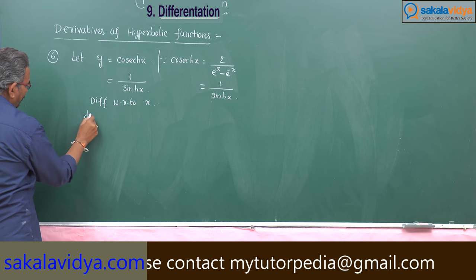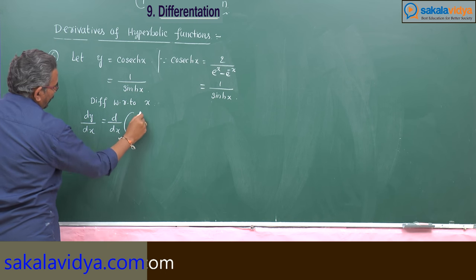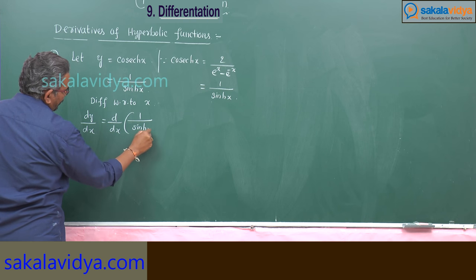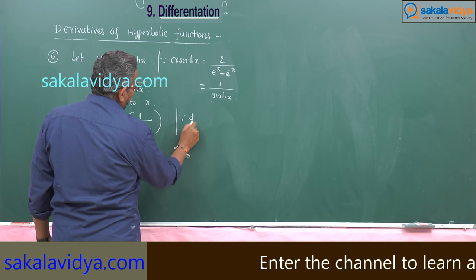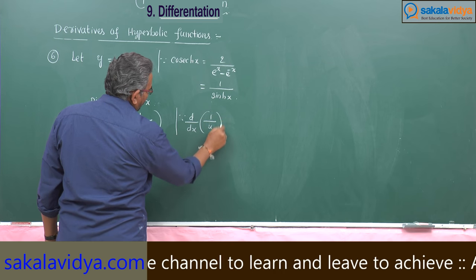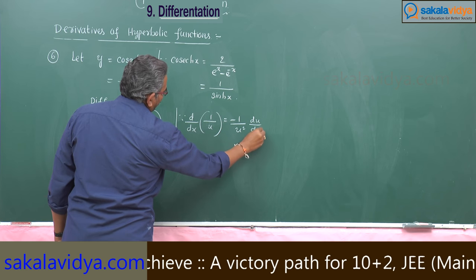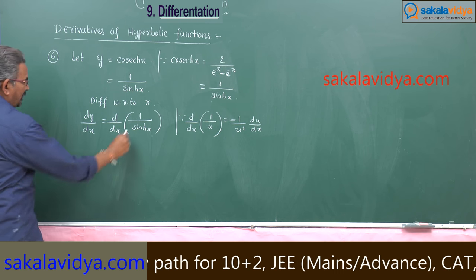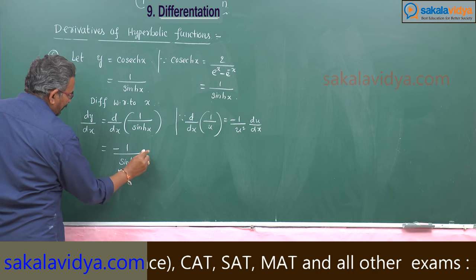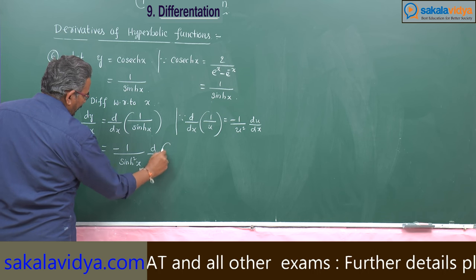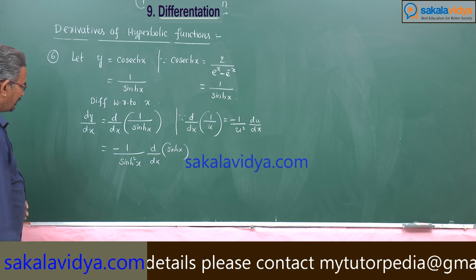So dy by dx is equal to d by dx of 1 by sinh x. Let sinh x be equal to u. We have d by dx of 1 by u equals minus 1 by u squared into du by dx. So this becomes minus 1 by sinh squared x into d by dx of sinh x. The derivative of sinh x is cosh x.